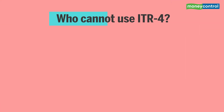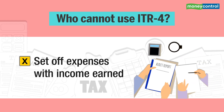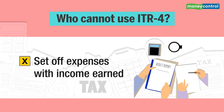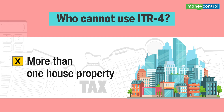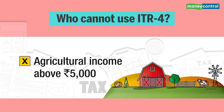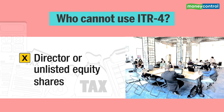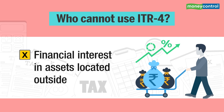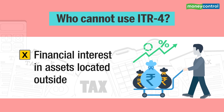Who cannot use ITR-4? If your total income exceeds Rs 50 lakh, ITR-4 cannot be used. Those who wish to set off expenses with income earned cannot opt for the presumptive income scheme and thus ITR-4 will not be applicable. It also cannot be used if you have more than one house property, agricultural income above Rs 5,000, are a director in a company, held any unlisted equity shares, or had financial interest in assets located outside India.